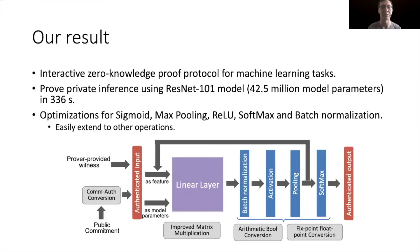Here are our results. We designed an interactive zero-knowledge proof protocol for machine learning tasks. We can prove a private inference using the ResNet model with 101 layers and 42.5 million model parameters in several minutes. We also developed automations for non-linear operations such as sigmoid, max-pooling, ReLU, softmax, and batch normalization, and our method can be easily extended to other operations.